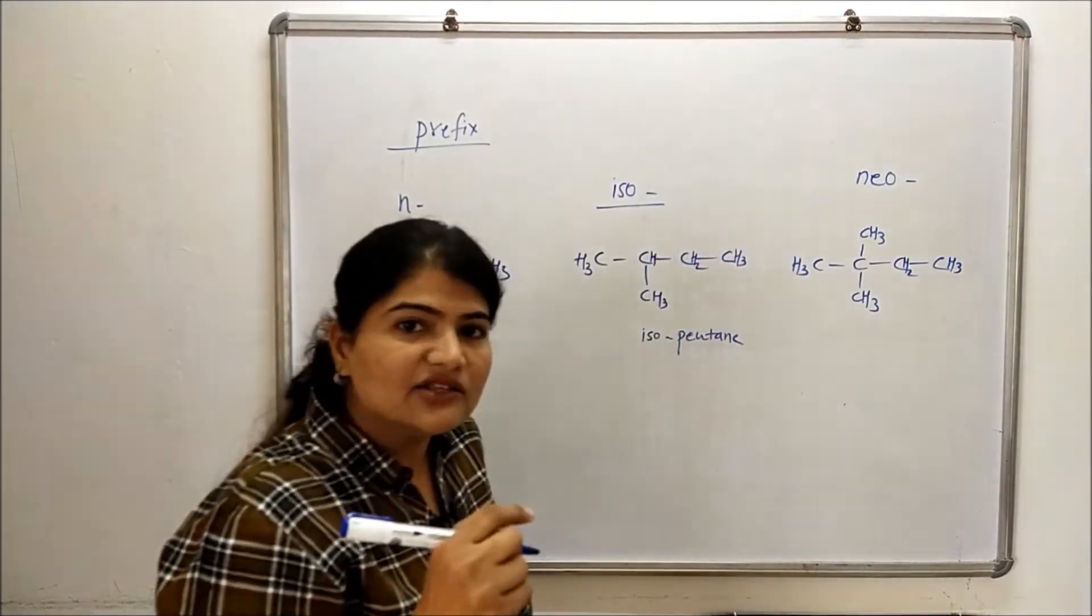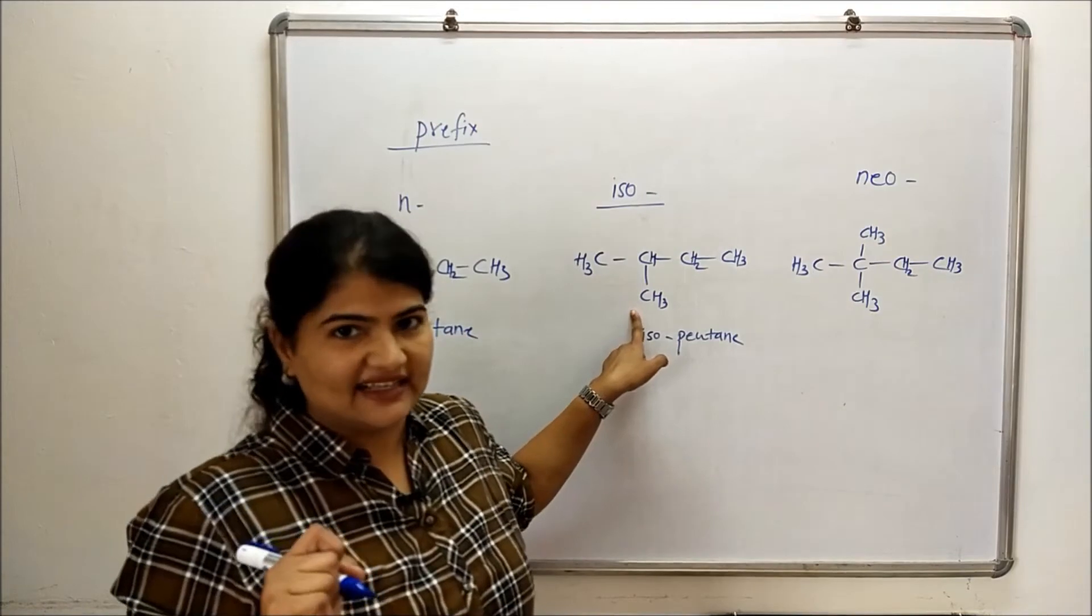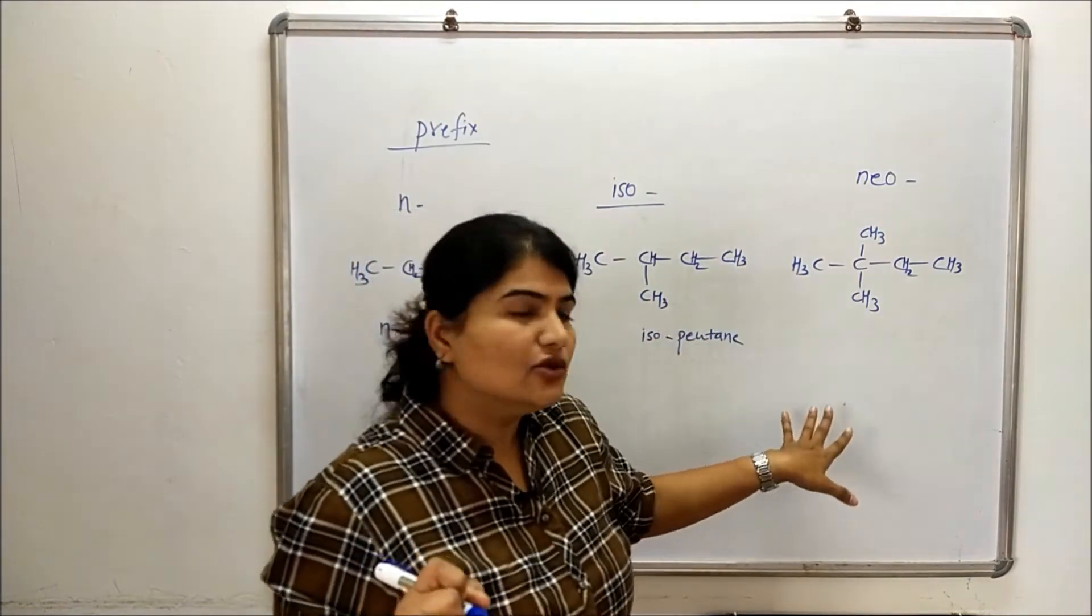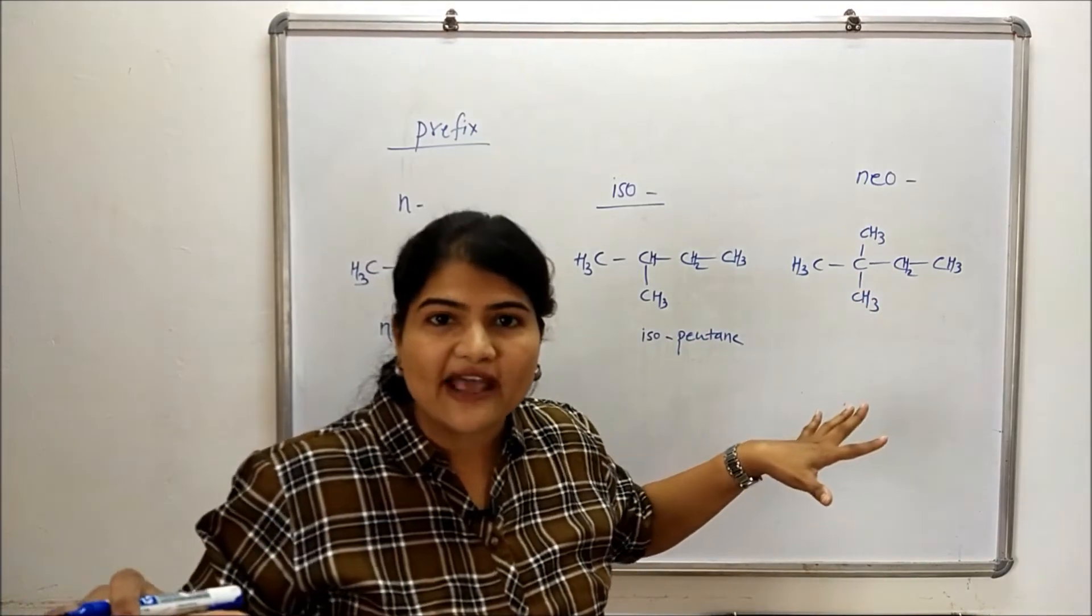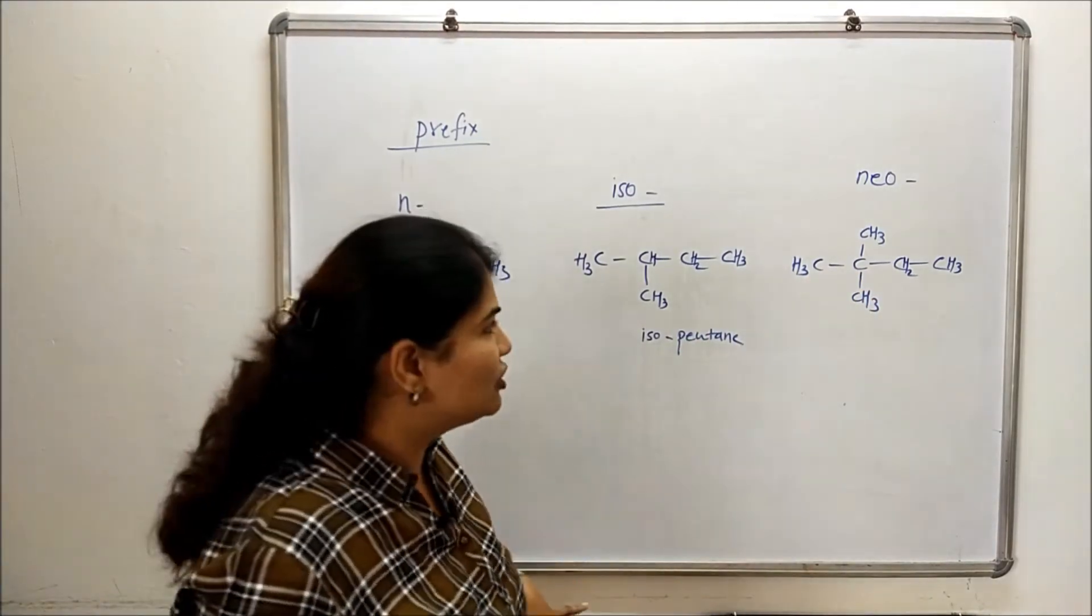When I say iso, only one methyl substitution at second last carbon will be there. When I say neo, two methyl substitutions on the second last carbon will be the only branching present in that particular organic compound.